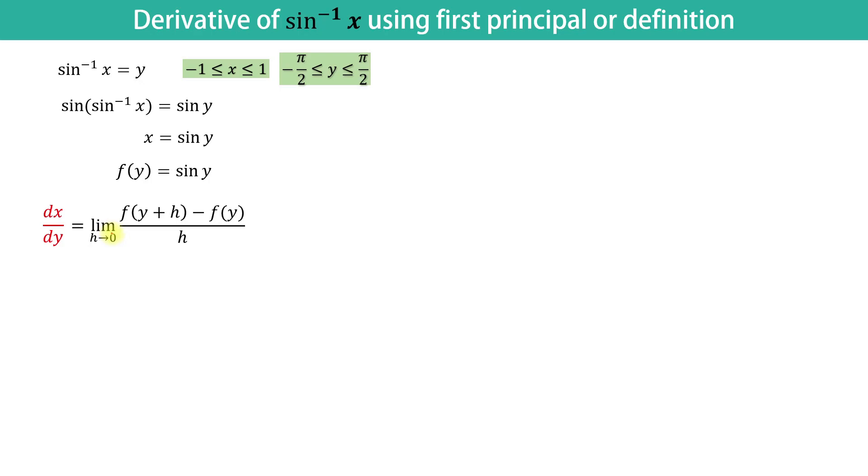Now, we will simply put the value of f of y plus h by replacing y by y plus h in this equation. Hence, we get sin of y plus h minus sin of y upon h when h tends to 0.